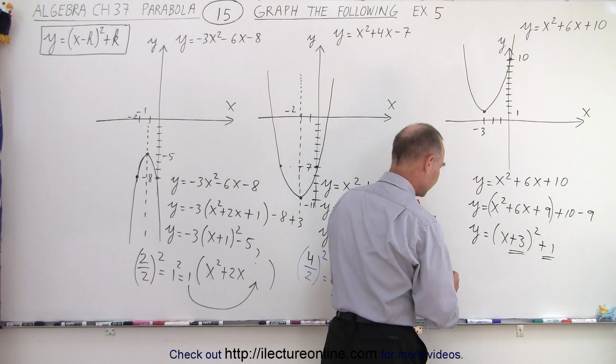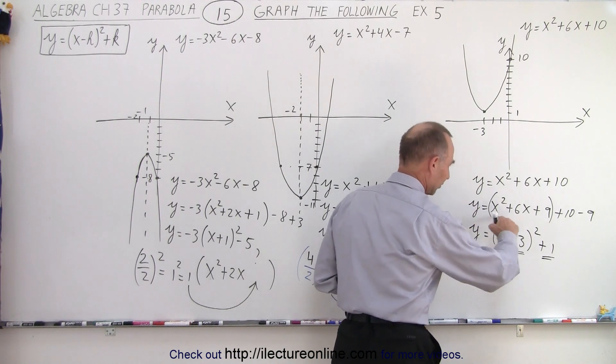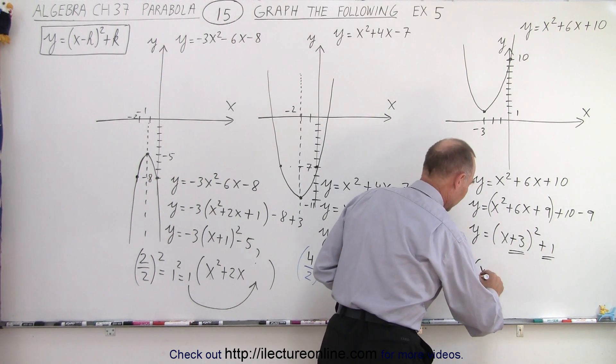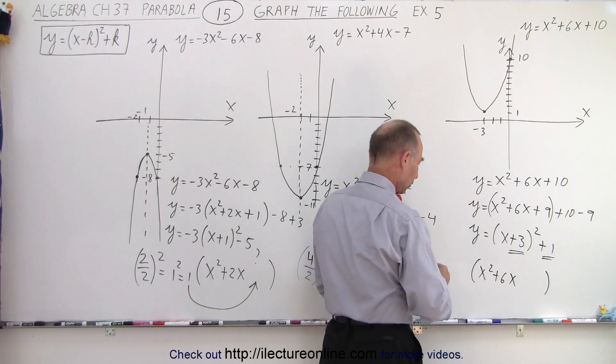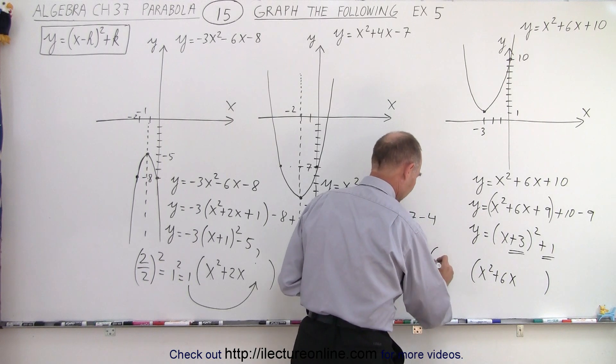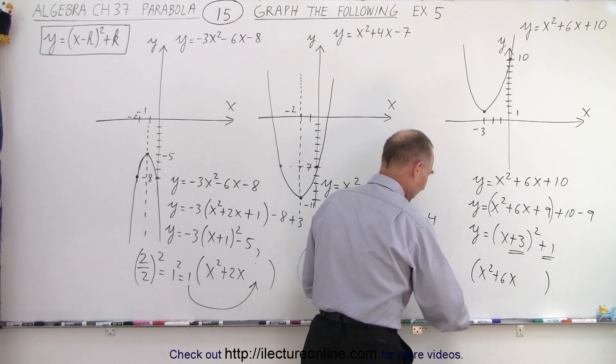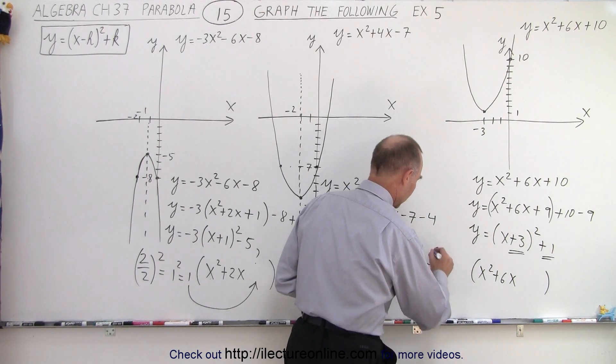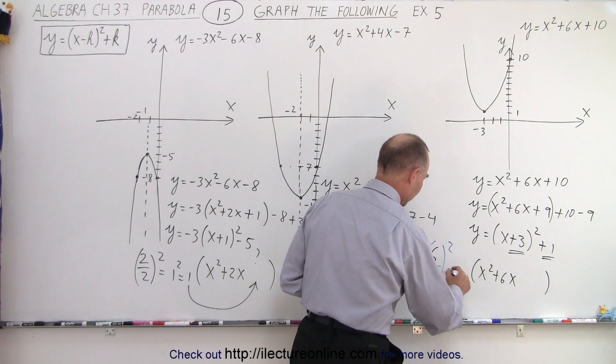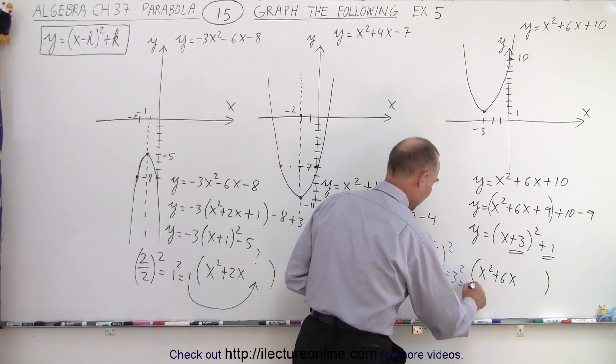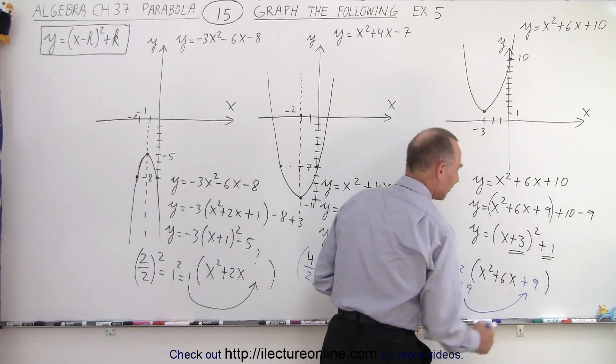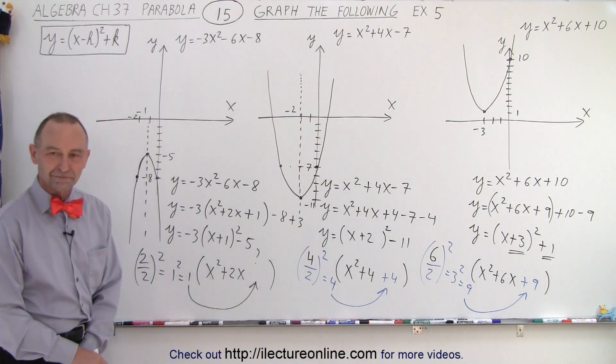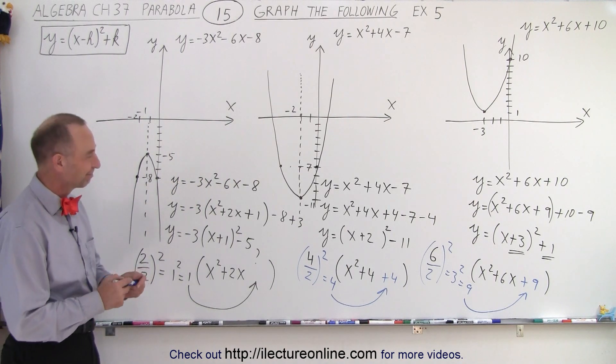And we do the same over here. So if I take this quantity right here, we have x squared plus 6x and then a blank is spaced for the third term. So we take the number 6, we're going to divide it by 2, and we're going to square that, which is 3 squared, which is 9. That's the number that goes in here. So plus 9, and that's where that came from. That helps. Thank you.